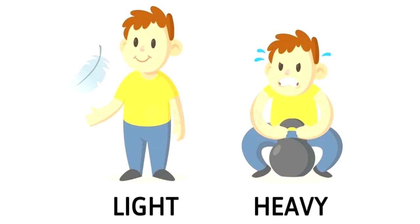In this picture, what do you see children? Two boys. One boy is having a feather and the other boy is having a weight in his hand. The boy with the feather is not feeling heavy. Why? Because the feather has no weight — it is light in weight. The feather is light in weight.